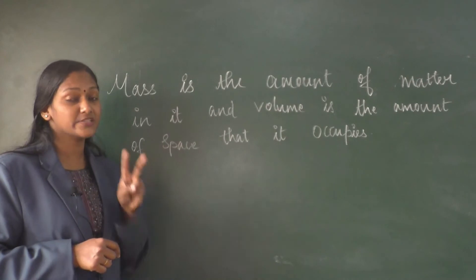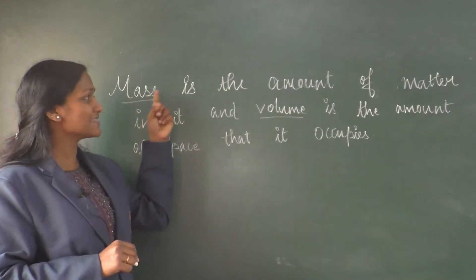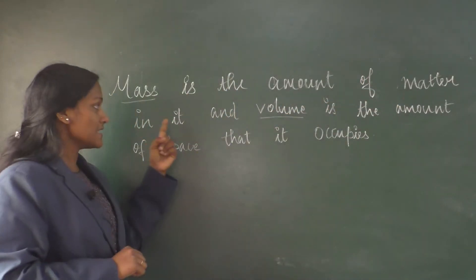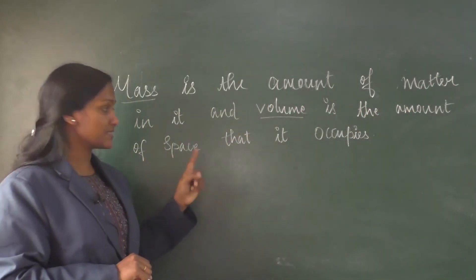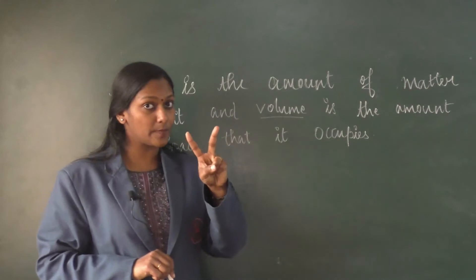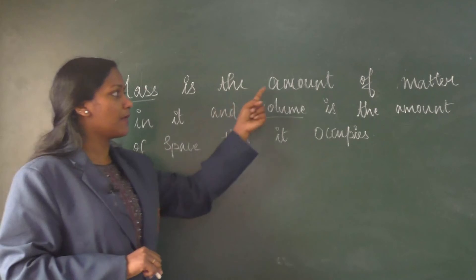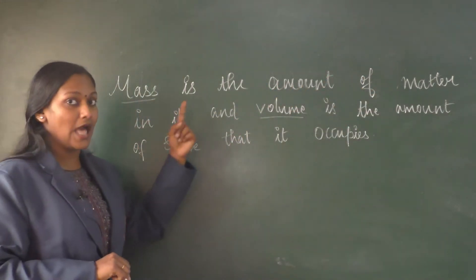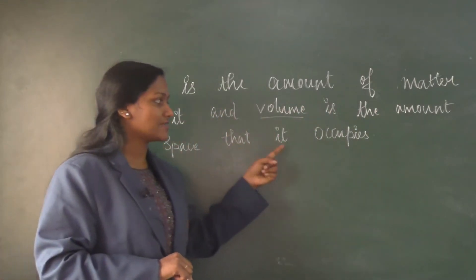Next we will look at the properties of different states of matter. Matter mainly has two properties: mass and volume. Mass is the amount of matter in it, and volume is the amount of space that it occupies.